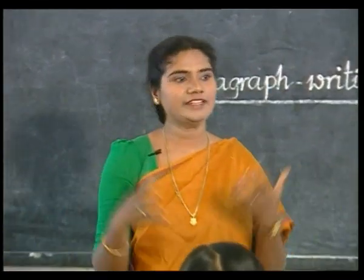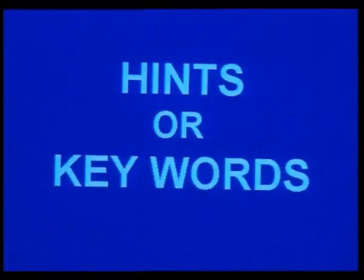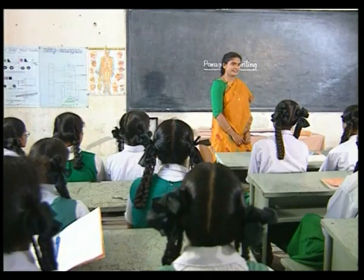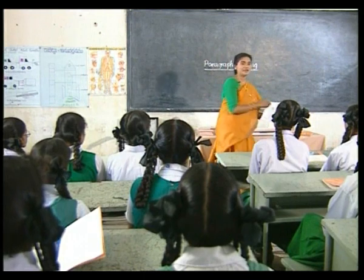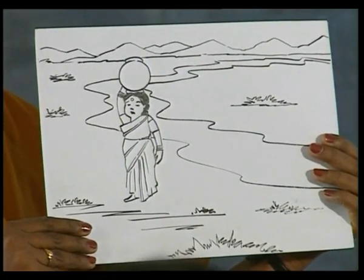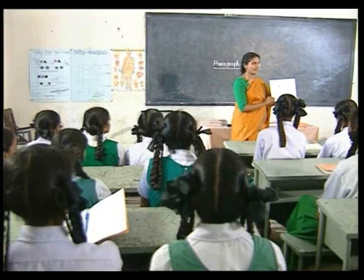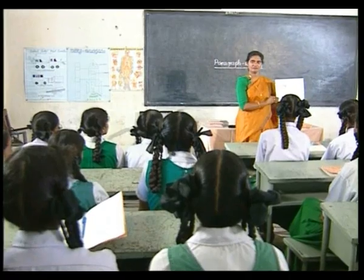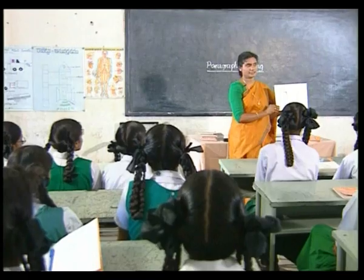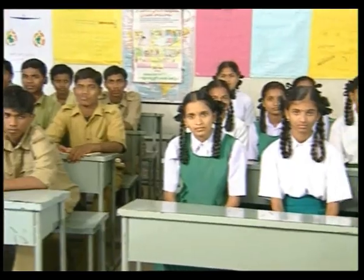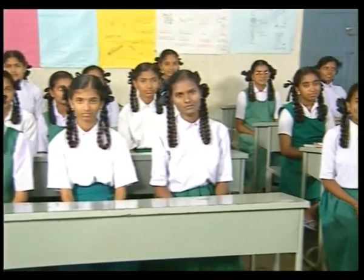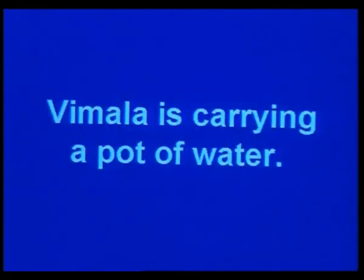These clues may be called hints or keywords. The hints by themselves do not carry complete meaning — you have to join them up meaningfully. Now look at this picture and try to guess the hints. Look at Vimala — what is she doing? She is carrying a pot. What does the pot contain? Maybe water. So the hints or keywords are: Vimala, carrying, pot, water. Vimala is carrying a pot of water.